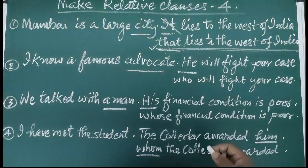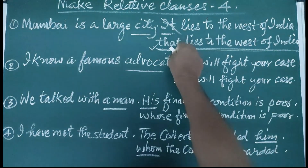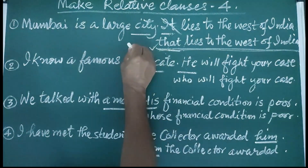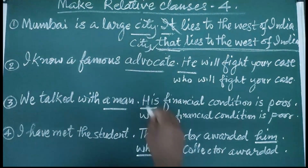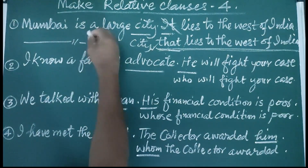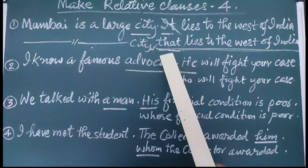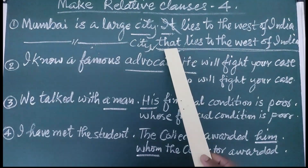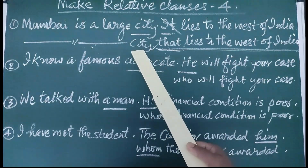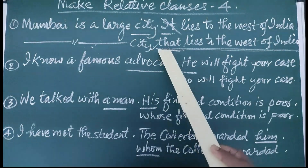The important thing to remember is that the relative pronoun we provide should be placed nearer to the antecedent. That means 'city that' go together. While combining, we should ensure that the relative pronoun is nearer to the antecedent — the noun in the first sentence which is equivalent to the relative pronoun.